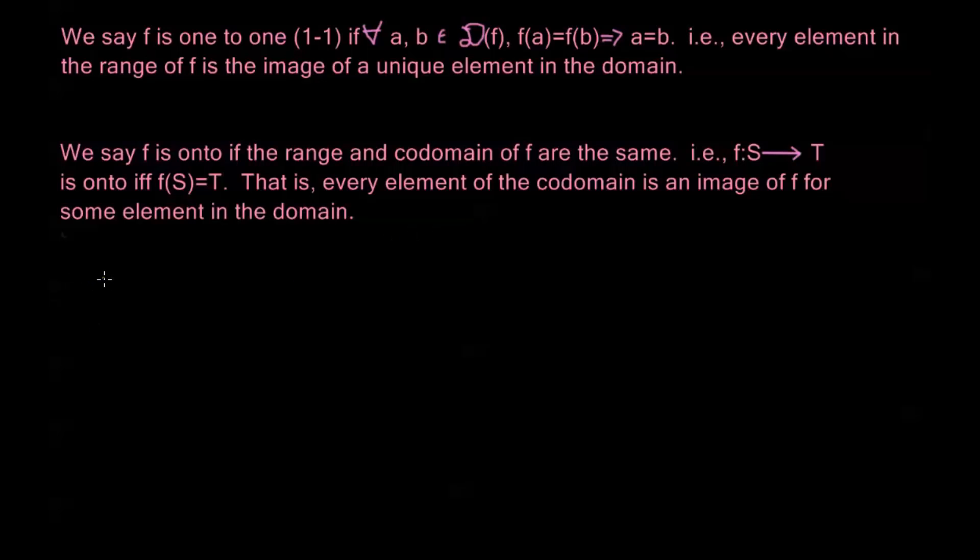Now I'm going to do an example here, so we can try to illustrate this a little bit better. So I'm going to say, I'm going to let my function f(x) equals x squared, and I'm going to define this on some different sets, and we're going to decide whether or not this is one-to-one, onto, or neither.